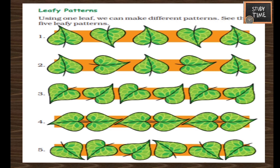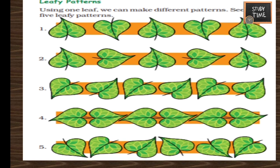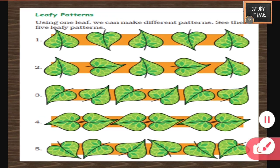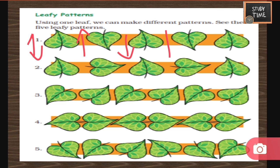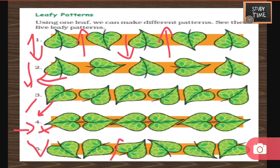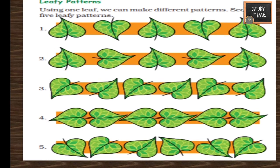Next, leafy pattern. You can arrange leaves in different ways to make different patterns. They have arranged leaves up and down. One leaf set: one leaf downwards, another leaf to the side. Third leaf arranged diagonally, fourth leaf arranged horizontally, fifth leaf arranged like a V and inverted V. Similarly, you can make different leafy patterns by arranging leaves in different ways.